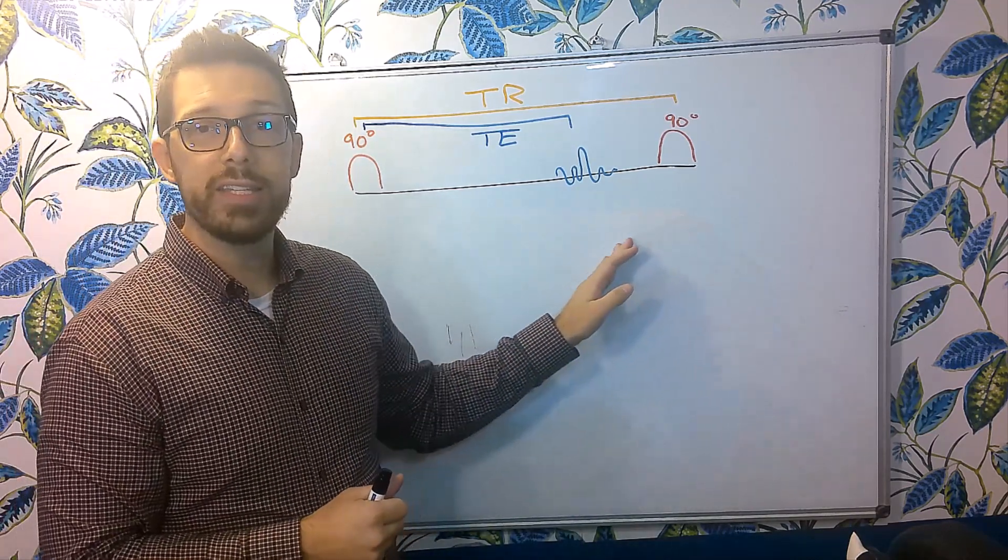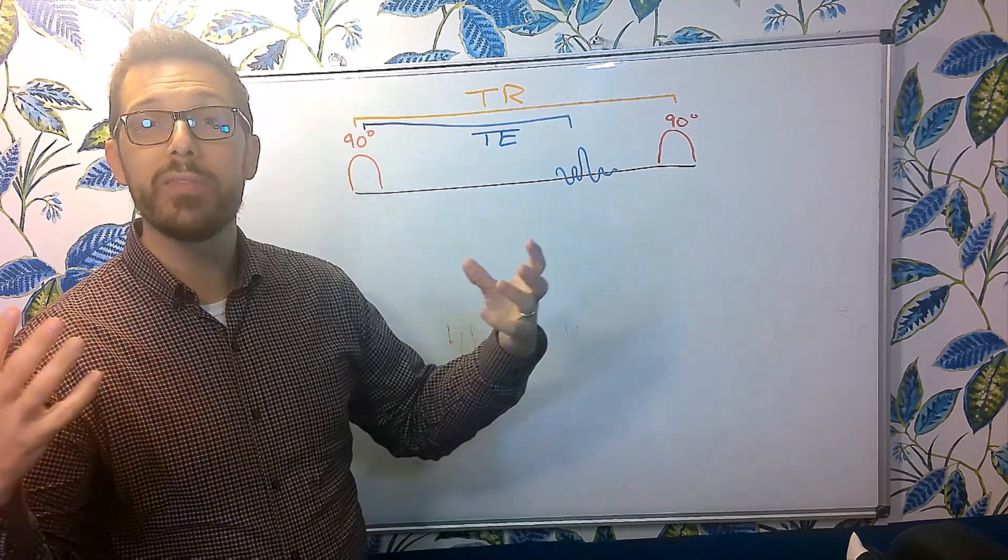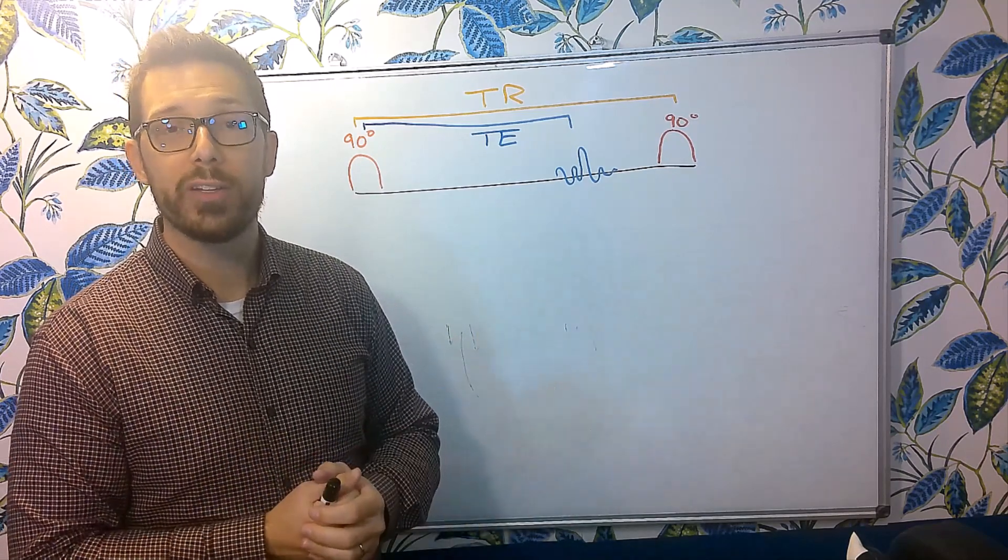But this is TR and TE. We can select any type of period of time and that'll give us a specific image contrast in our image. These are the controlling factors for image contrast.